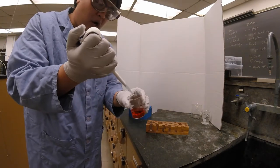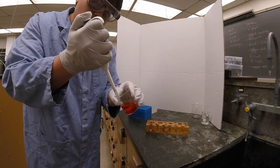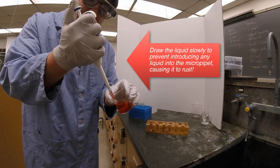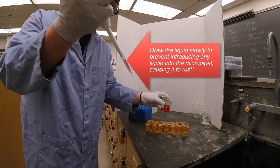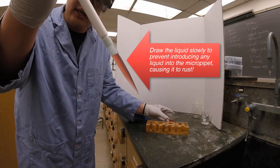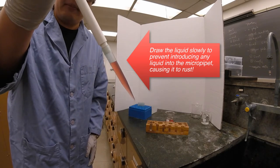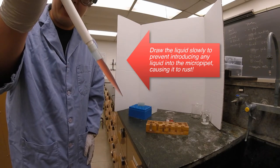Next you want to draw up your liquid slowly. And the reason is that if you draw the liquid up too quickly, it will shoot into the micropipette, and that might damage the device, and that would be really bad.